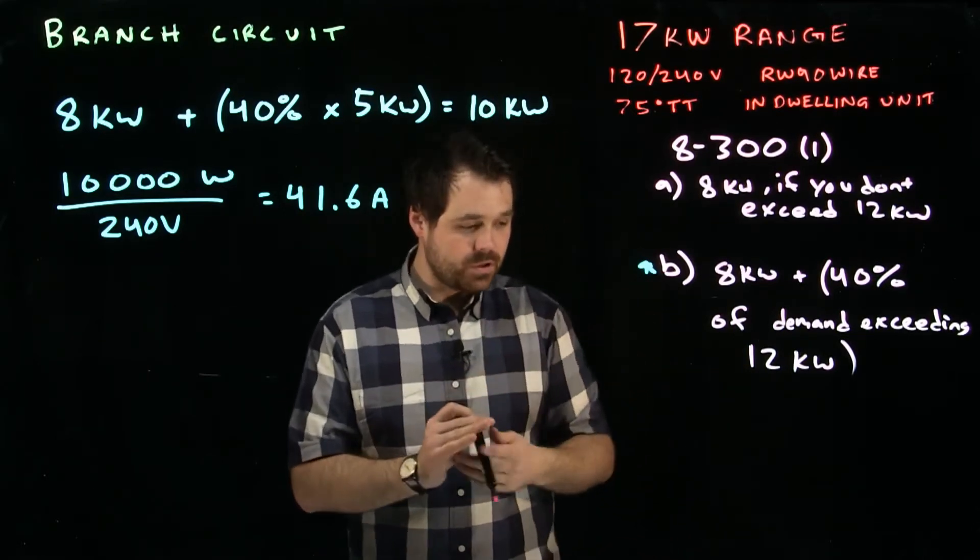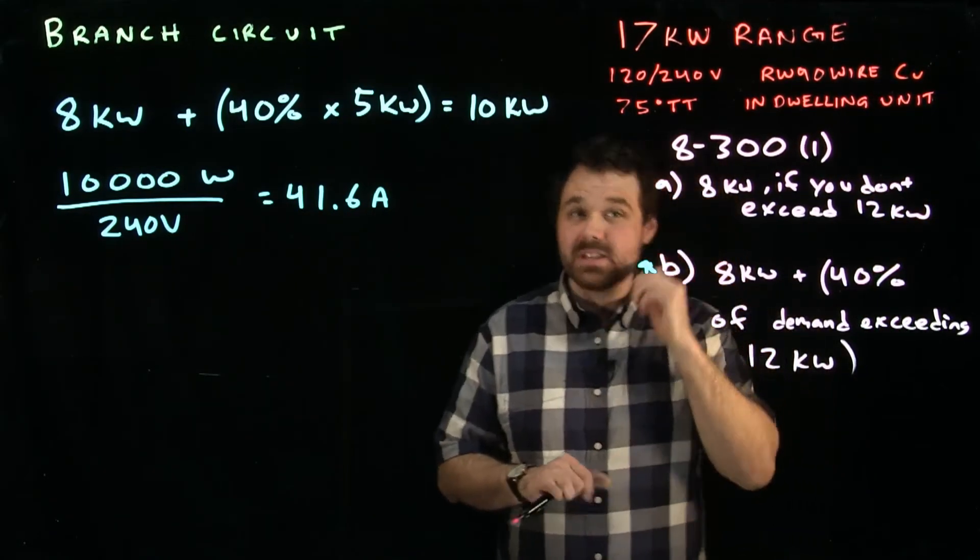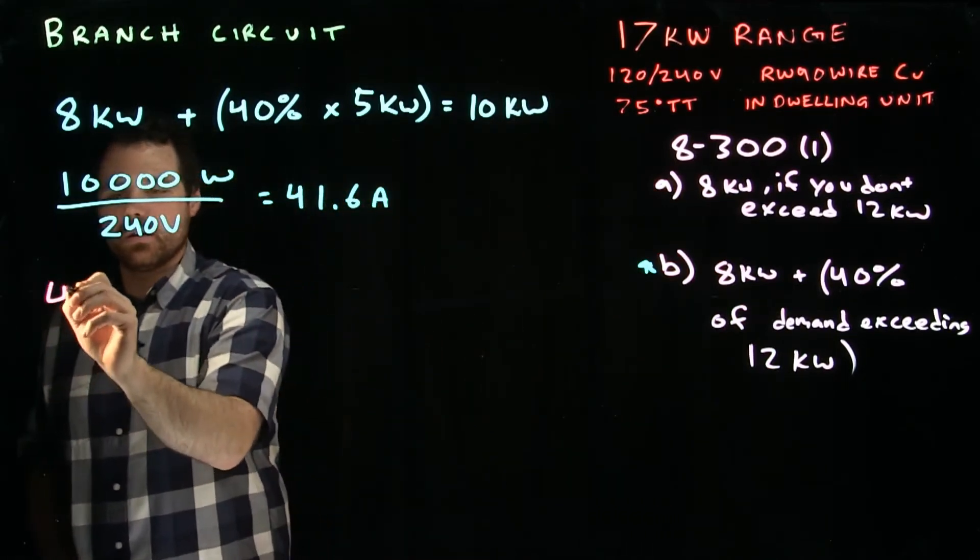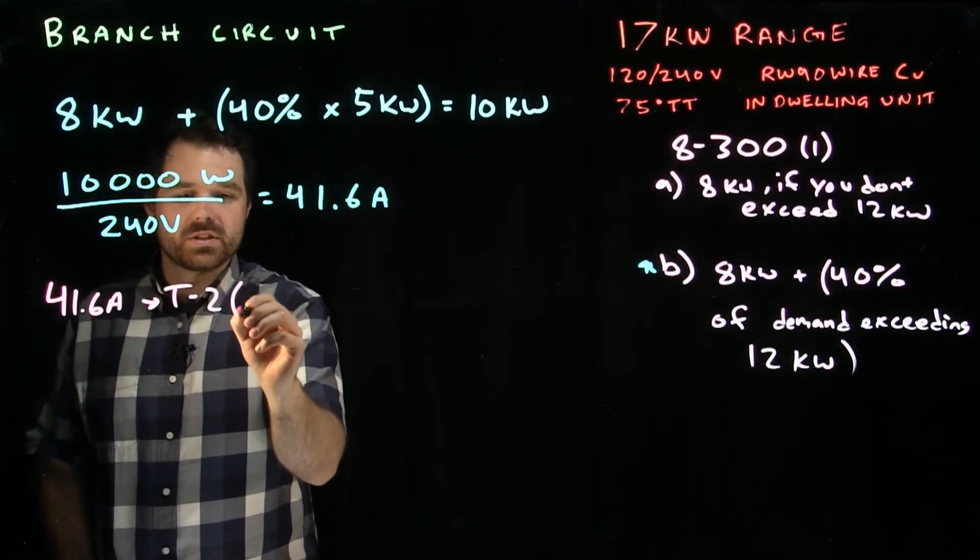With this, we're doing RW90. We'll say it is copper. RW90 copper is the conductor we are running. So we take our 41.6 amps. We're going to go to table 2.